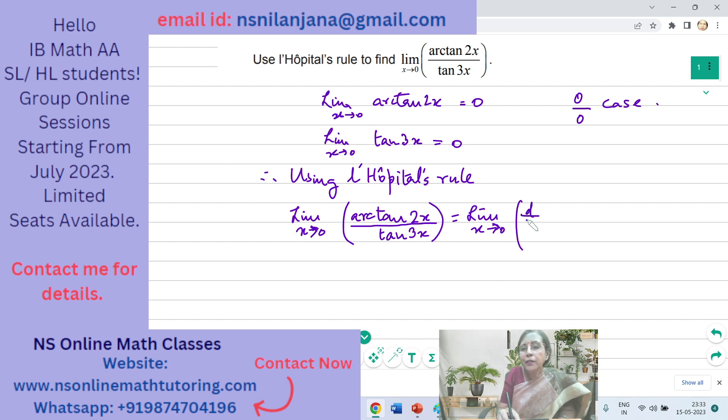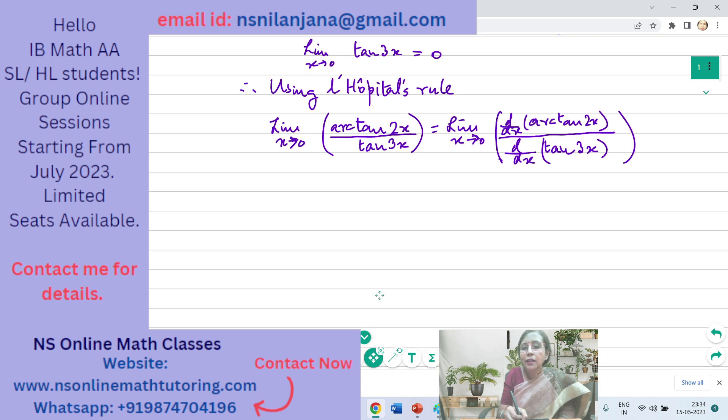Arctan 2x over tan 3x should be equal to limit x tends to 0. The derivative of the numerator, d/dx of arctan of 2x. The derivative of the denominator, d/dx of tan 3x. That is what L'Hôpital's rule says. So, d/dx of tan 3x. Let us get the derivative of the numerator and the denominator.